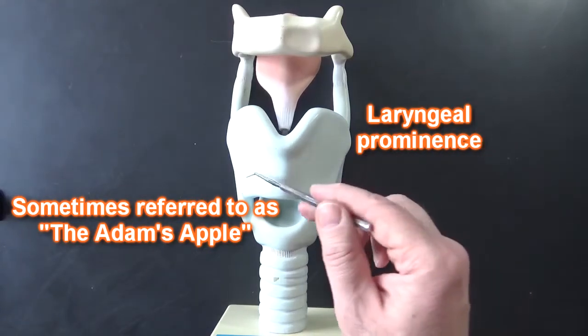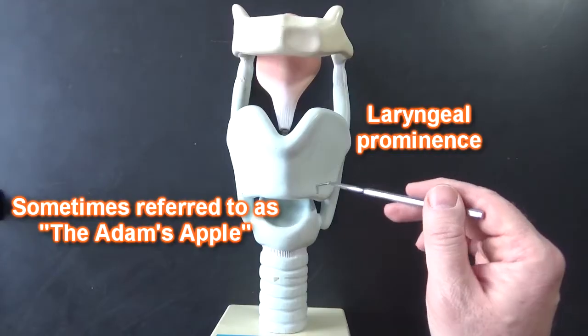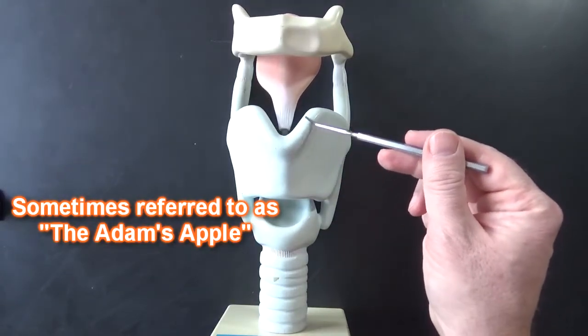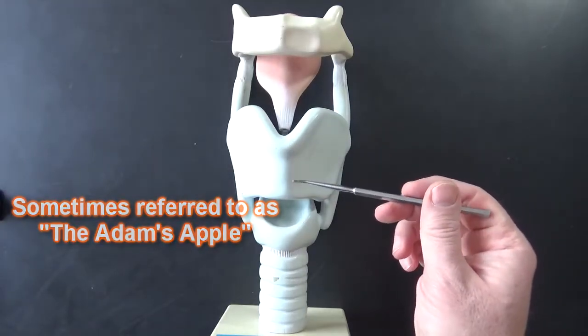Males have more testosterone so the cartilage grows bigger making this protrude more in the neck, the anterior neck.